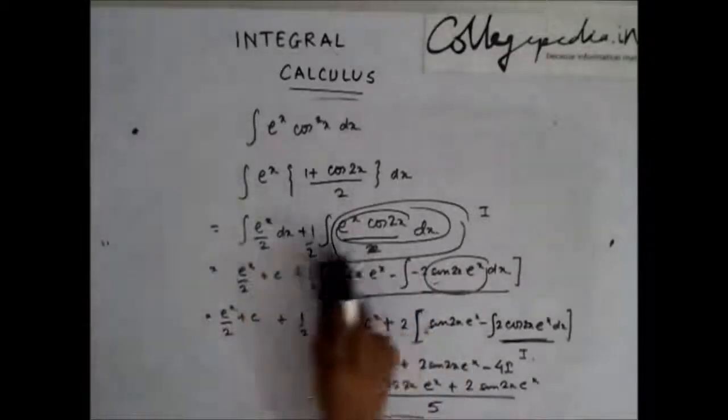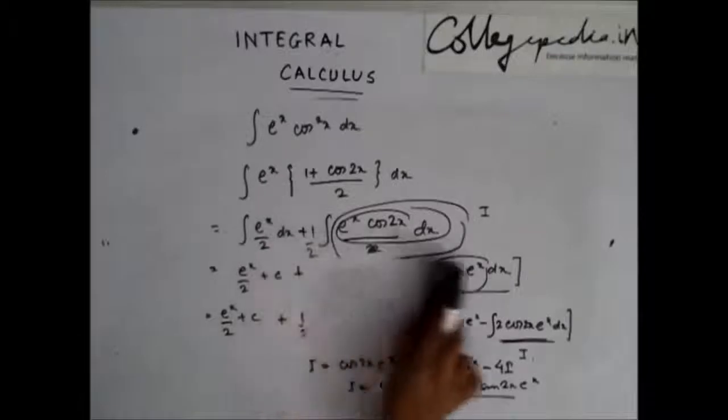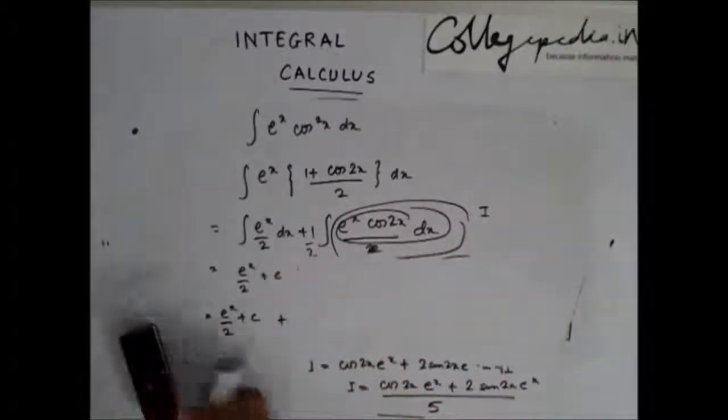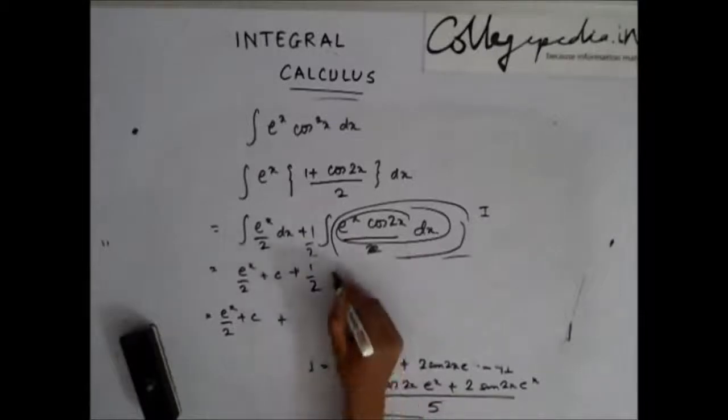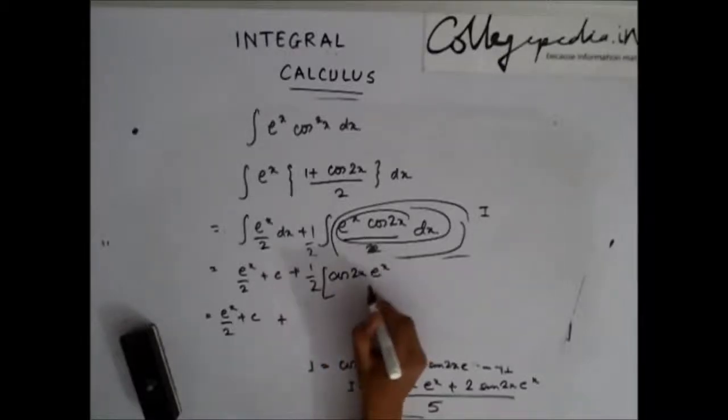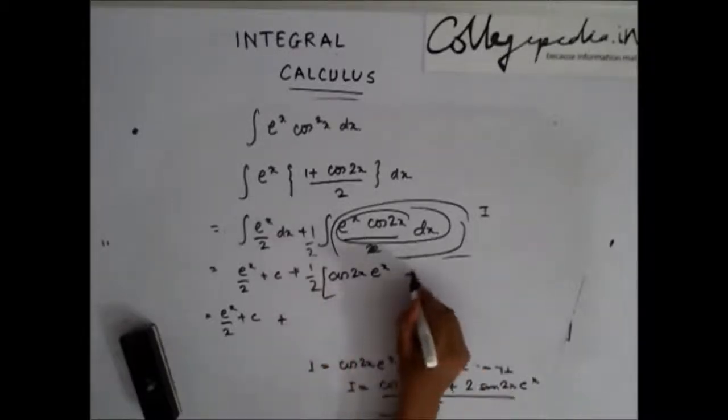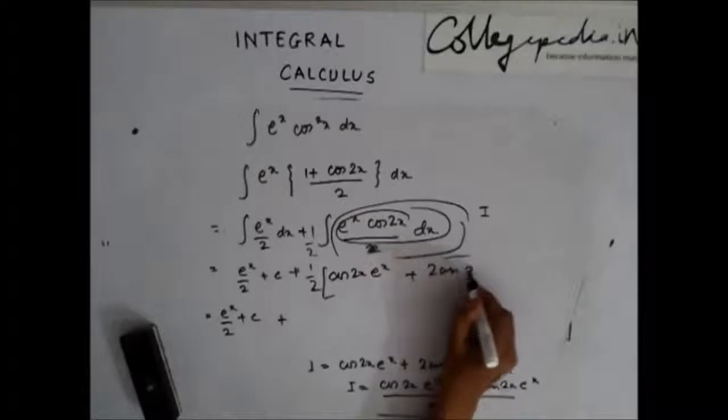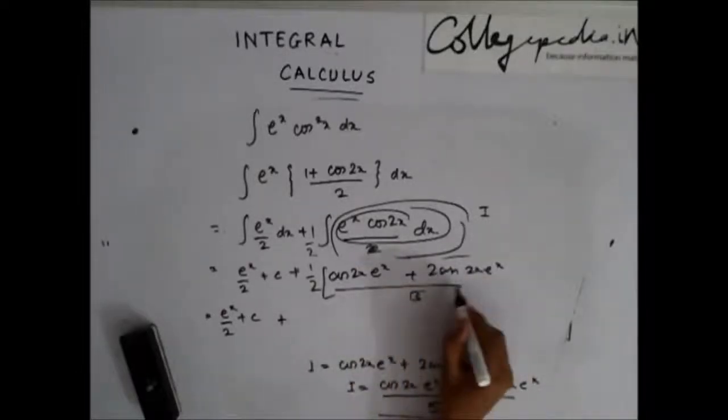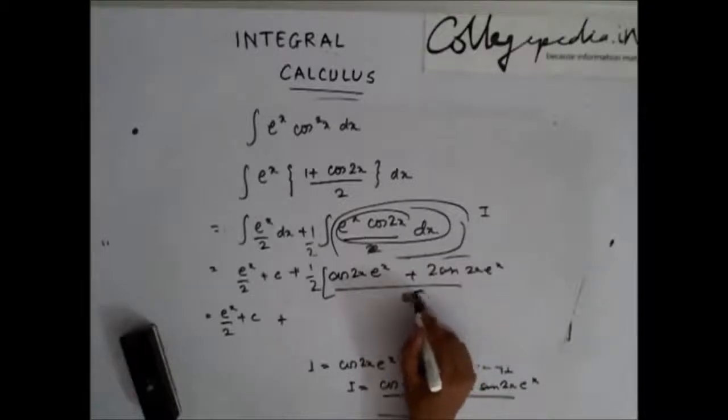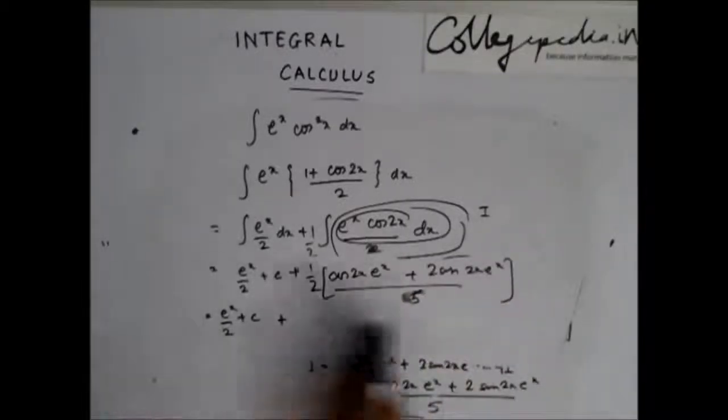So I can replace this whole thing now because I have been able to find what i is with cos of 2x e to the power x plus 2 sin 2x e to the power x by 5. So this is my solution.